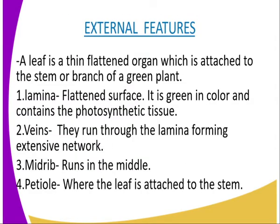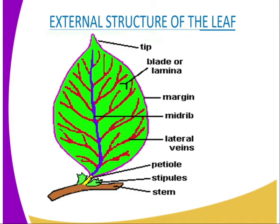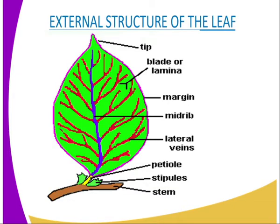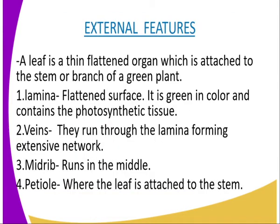Now we need to explain more about the parts that you have seen. I would like to start by defining what a leaf is. A leaf is a thin, flattened organ which is attached to the stem or branch of a green plant. Remember, the leaf is where photosynthesis takes place — the process by which green plants make their own food. The plant must be green for it to make its own food. The first part is the lamina, also known as the blade. The lamina is a flattened surface, green in color, and contains the photosynthetic tissue.